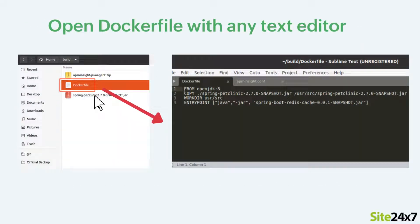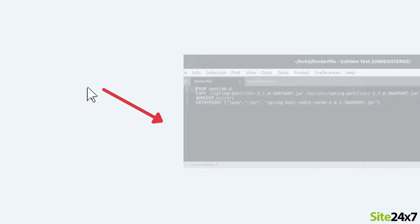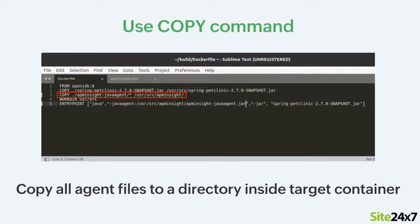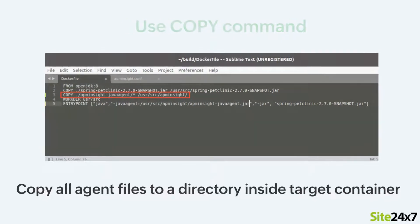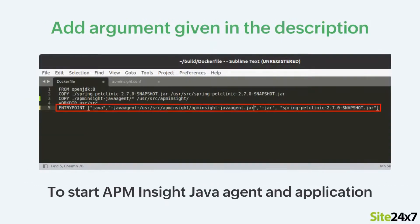Next, open the Dockerfile with any text editor. Note: please follow the links provided in the description to learn more about the Dockerfile. Use the COPY command to copy all the APM Insight Java agent files to a directory inside the target container. Then add the argument given in the description to the startup command. This Java agent argument helps start the APM Insight Java agent along with the application.